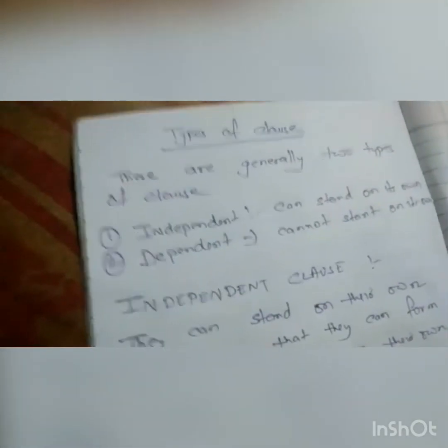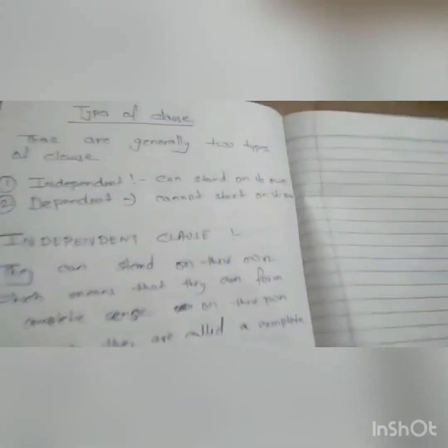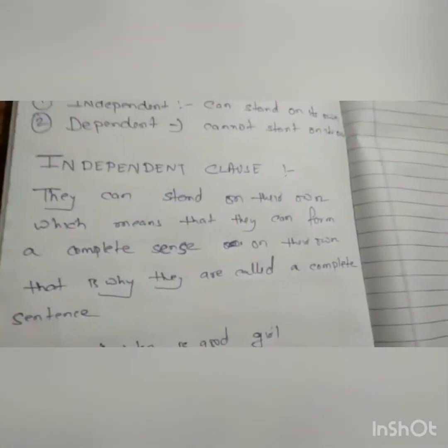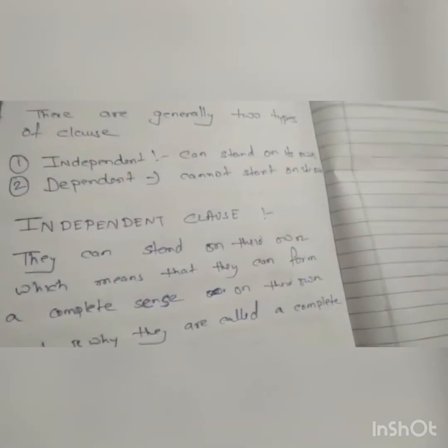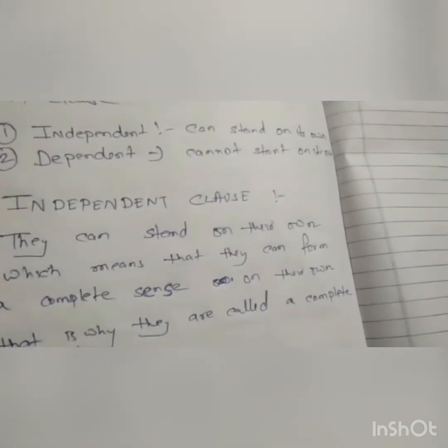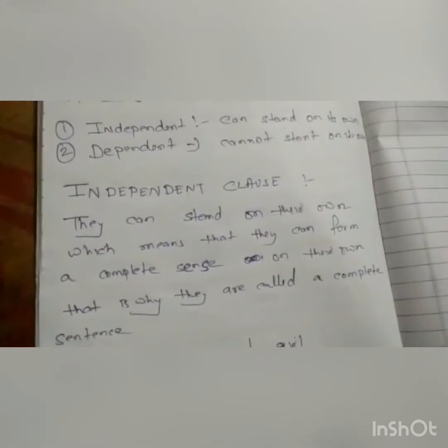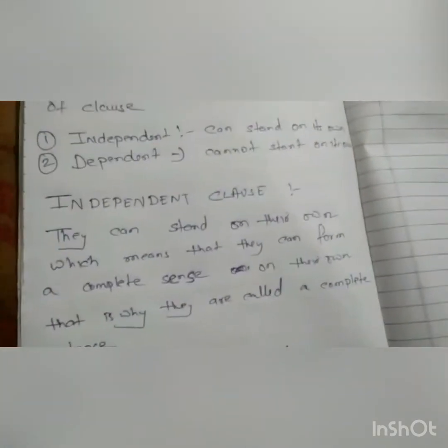Now, types of clause. There are two types of clause: independent clause and dependent clause. What is an independent clause? They can stand on their own, which means they can form complete sense on their own. That is why they are called complete sentences. Independent clauses are the type of clause that form a complete meaning. By reading those clauses we get a complete sense and can understand the meaning of those clauses.